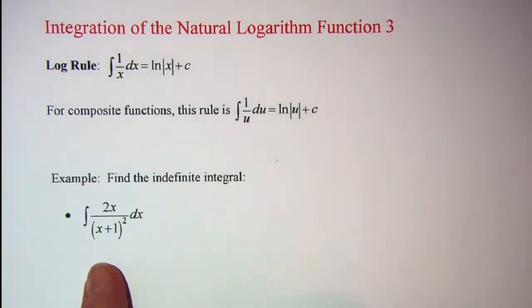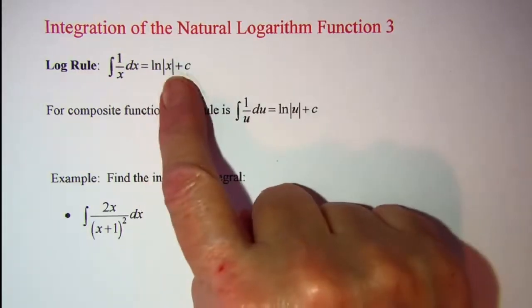Our first example: find the integral of 2x over the quantity x plus 1 squared dx. Now you can see that if I multiplied out this denominator it would be a second degree polynomial and the degree of our denominator is one more than the degree of the numerator. So we will need to use our log rule.